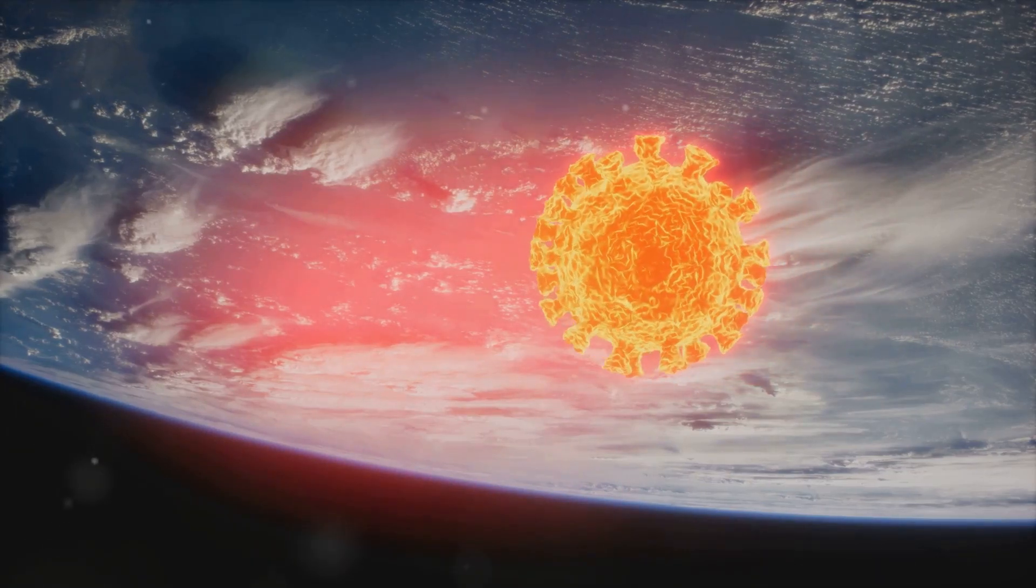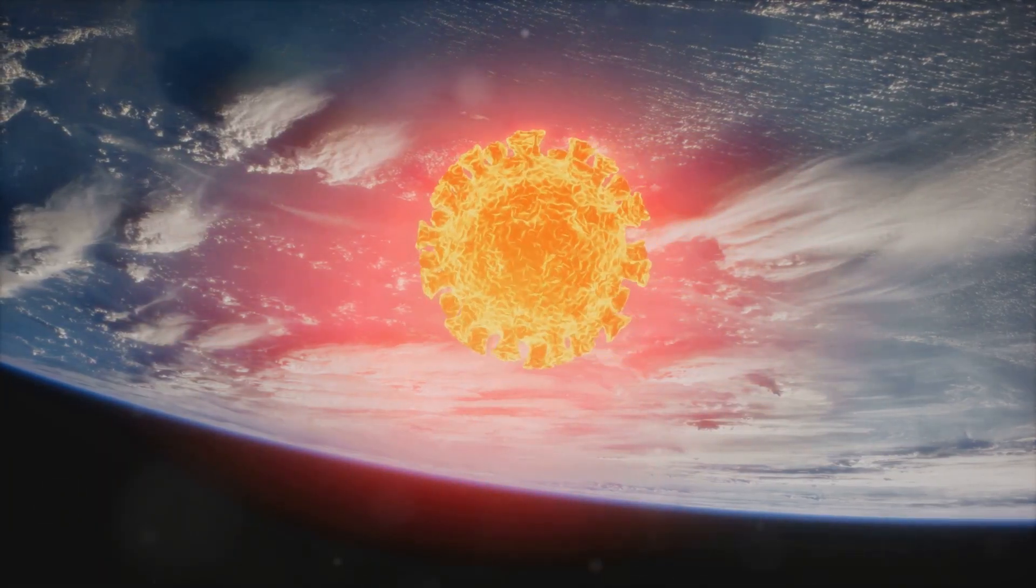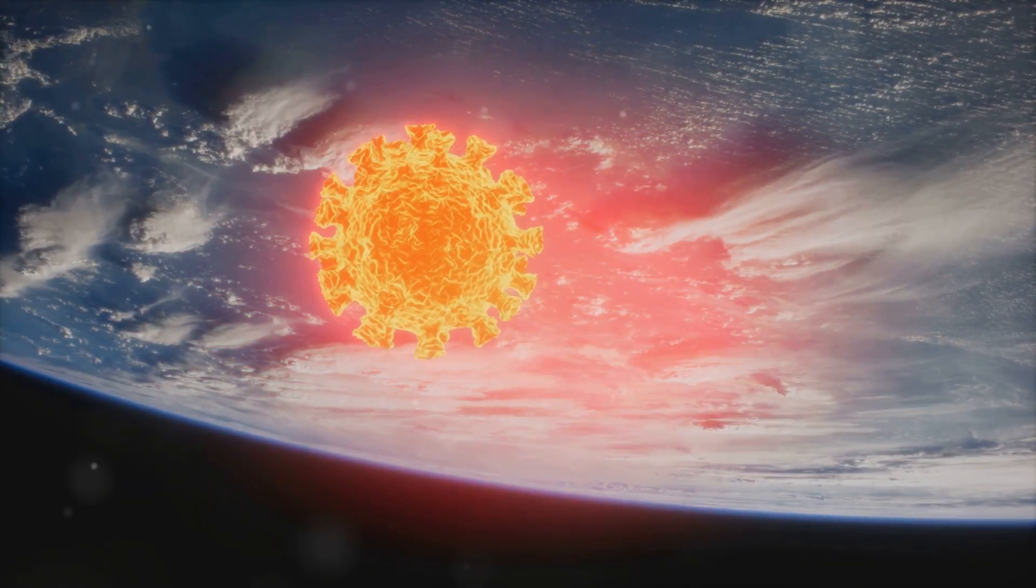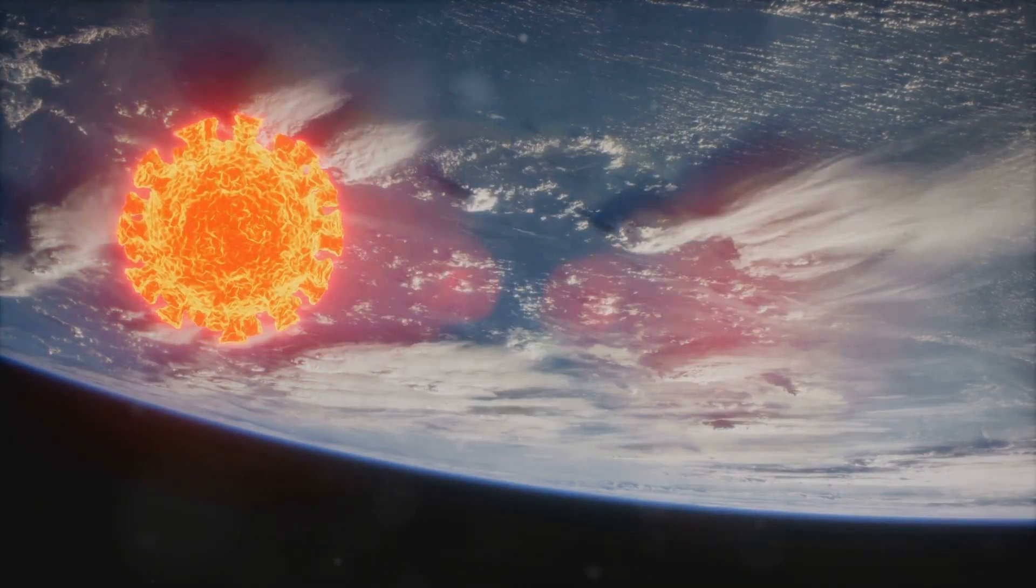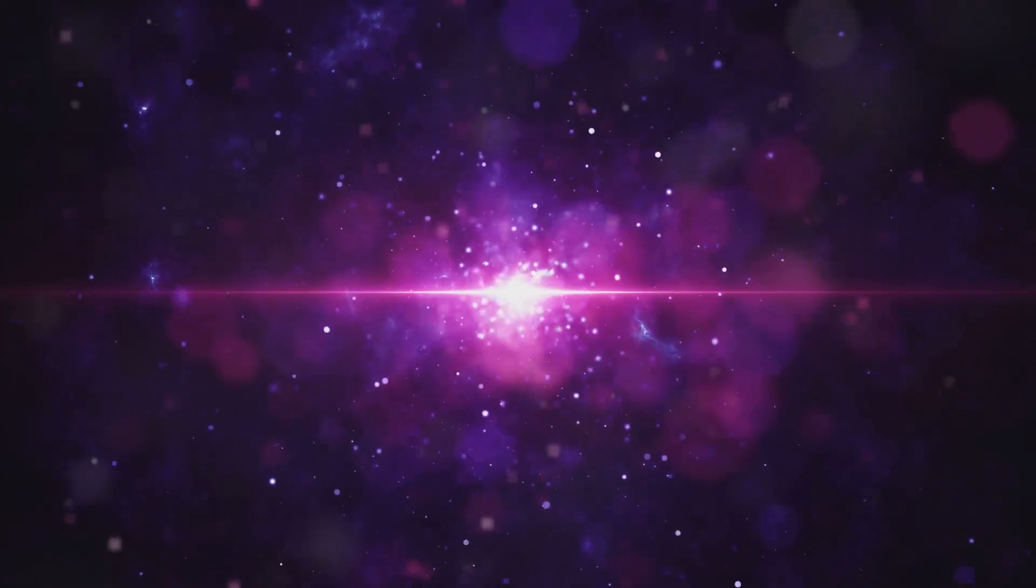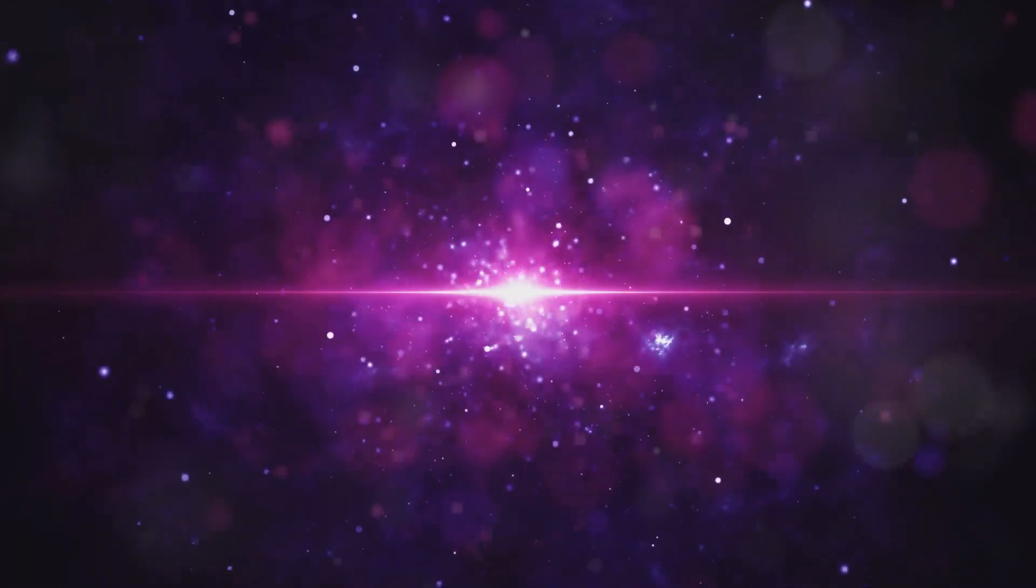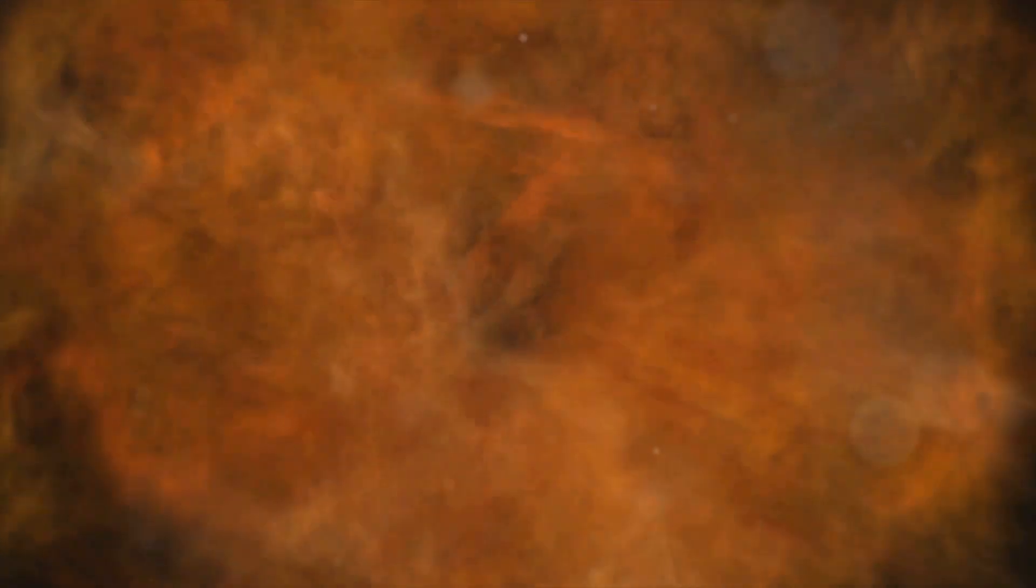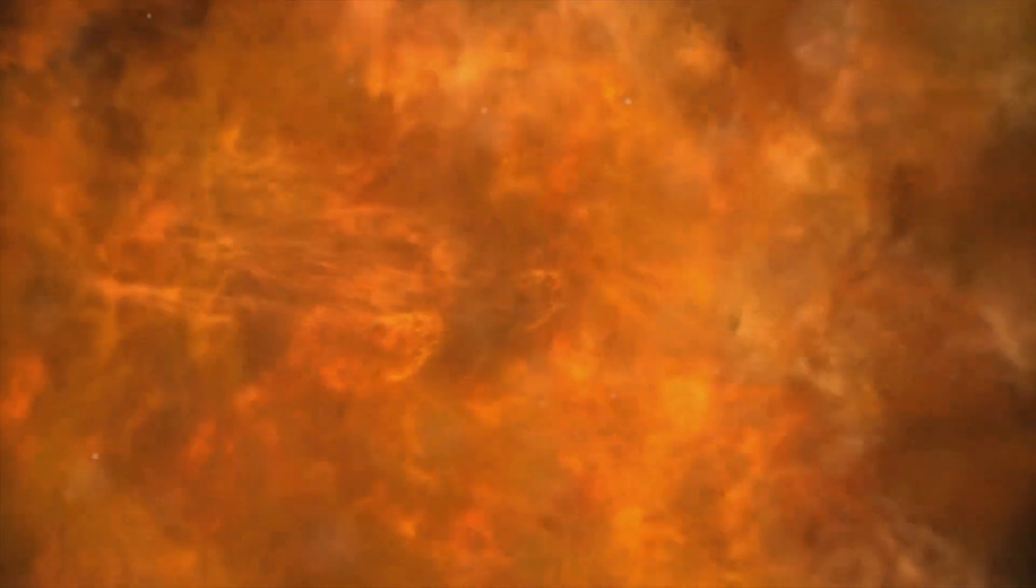If one were to happen close to Earth, it could be devastating. The intense radiation could strip away our atmosphere, making life as we know it impossible. Luckily, they are rare and usually happen very far away. The vast distances in space act as a natural shield, protecting us from these cataclysmic events.